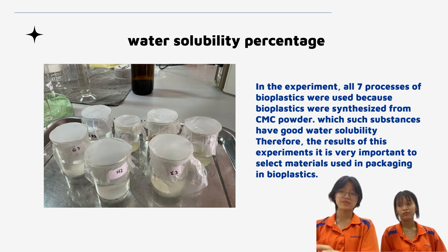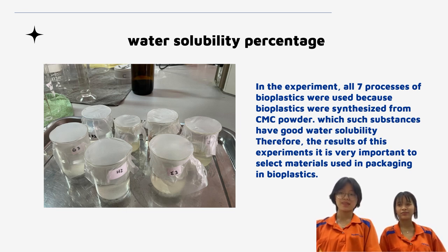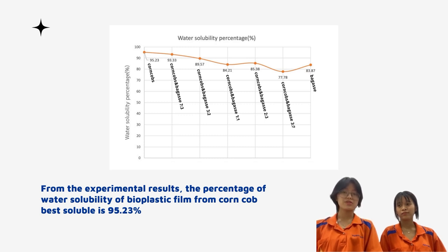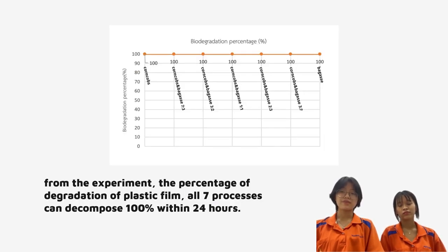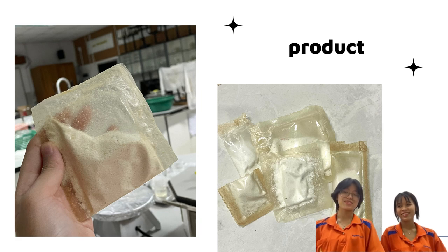In the experiment, all seven formulations of bioplastic were tested. Because the bioplastics were synthesized from CMC powder, which has good water solubility, these results are very important in selecting materials for packaging. The water solubility of the bioplastic film from corn cobs bagasse was 95.23%. For biodegradation, the bioplastic covered with soil from the experiment showed that all seven formulations of bioplastic film can decompose 100% within 24 hours.